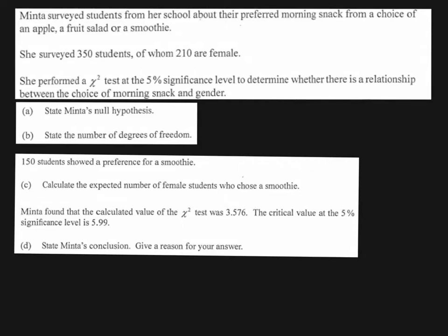Question 10 is all about the chi-squared test, which should have been fairly straightforward for those of you that did this for your project. We've got Minta who surveyed students from her school about their preferred morning snack, which was either an apple, a fruit salad, or a smoothie. She surveyed 350 students, of which 210 are female. She performed a test at the 5% significance level to determine whether there is a relationship between the choice of morning snack and gender.